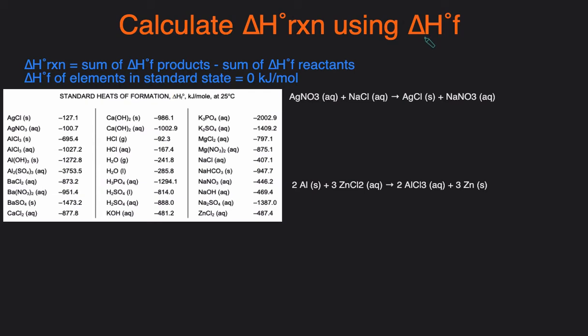There are many ways to calculate the delta H of a reaction, which you can think of as the heat of a reaction - how much heat the reaction either releases or absorbs. Some of the ways are Hess's law, bond enthalpy, but one of the main ways is heat of formation. That's what this video is going to cover.